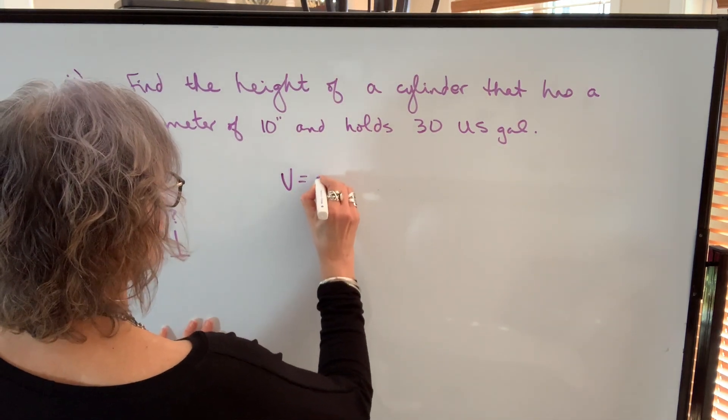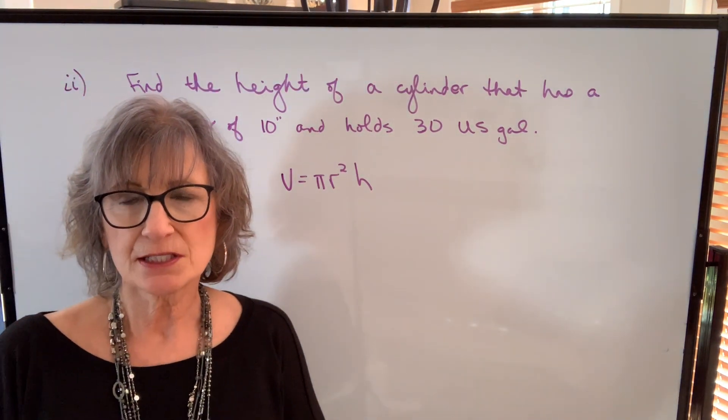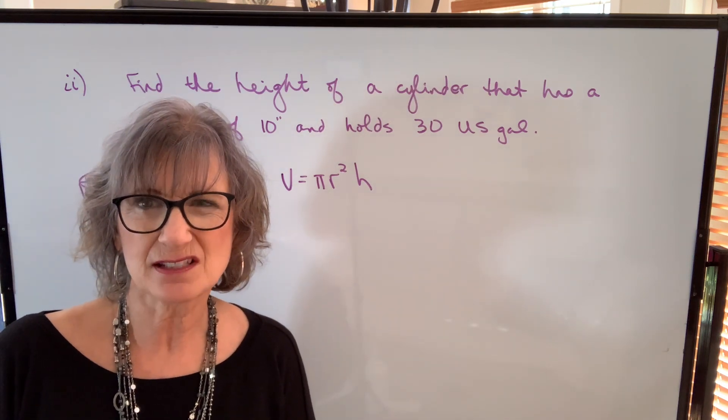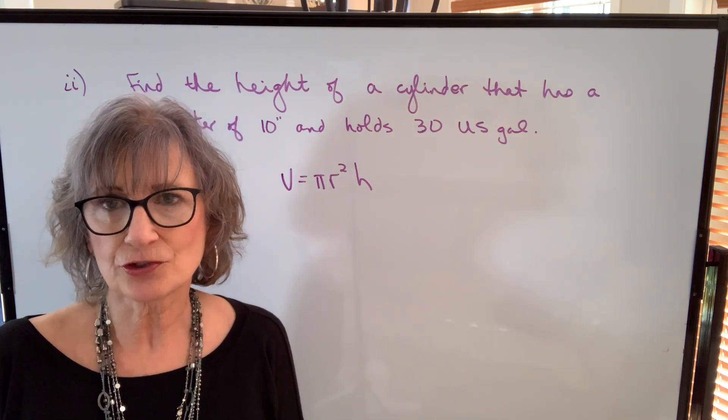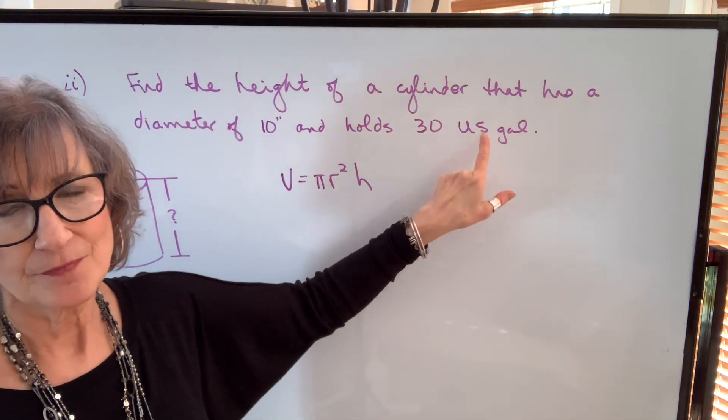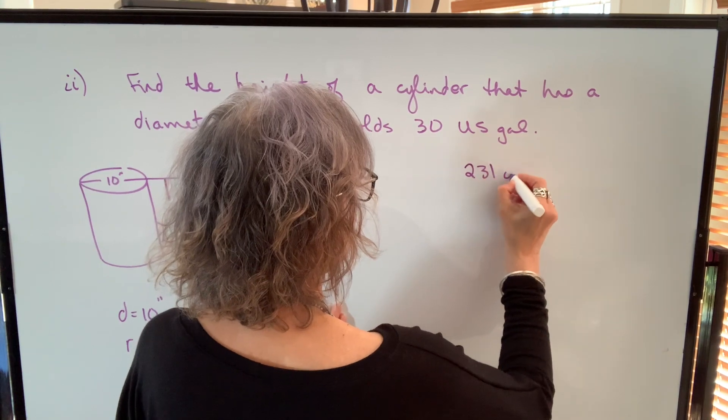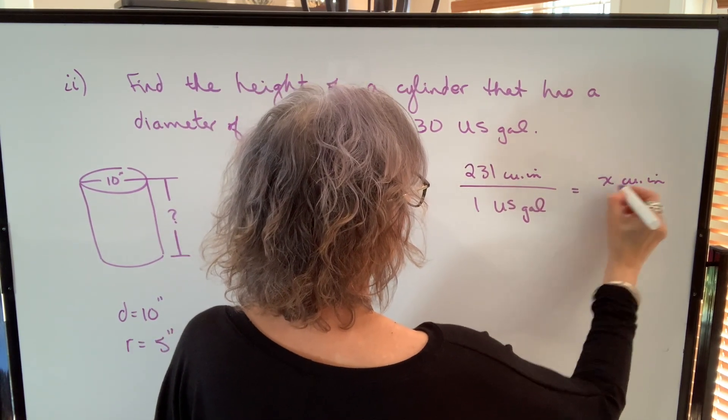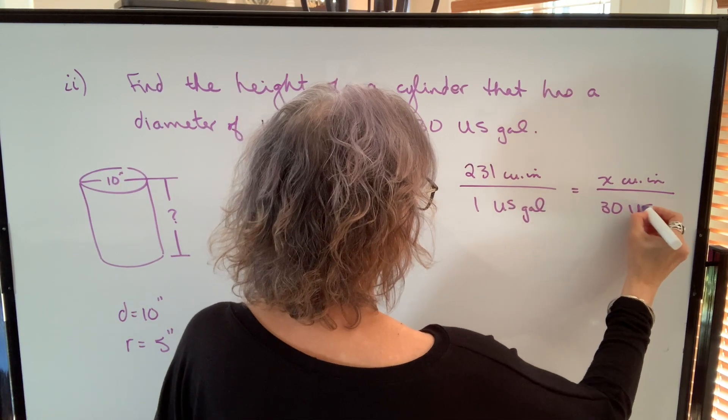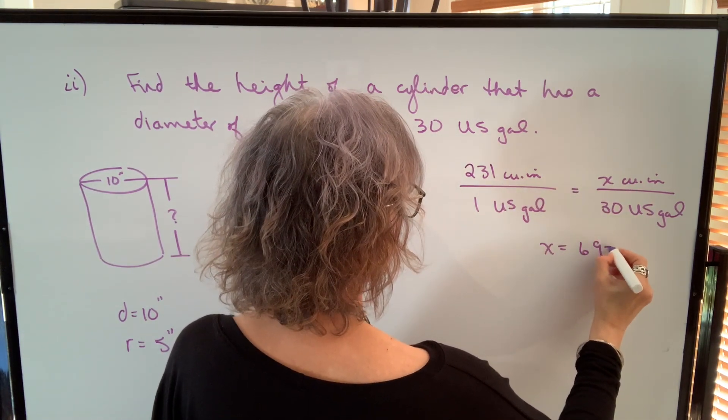So volume of a cylinder is pi times radius squared times height. We know the diameter is 10 inches, therefore the radius is 5 inches. We want to find the height. Because we're working with the radius in inches, and we want to keep it that way, we don't want to change inches to feet because it's going to be an awkward decimal value. But because we're going to be working with our dimensions in inches, we need to have our volume in cubic inches. This is not a volume, it's a capacity. I need to change that to cubic inches. So let's use our proportion. I know that 231 cubic inches is equivalent to one US gallon. So I want to know how many cubic inches I would have if I had 30 US gallons. 1 times x will equal 231 times 30, which will be 6930 cubic inches.